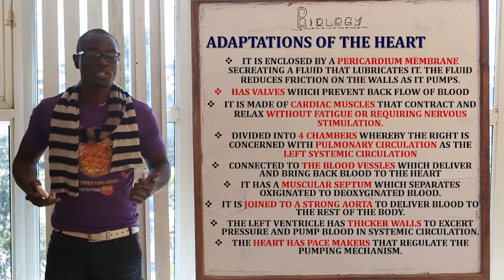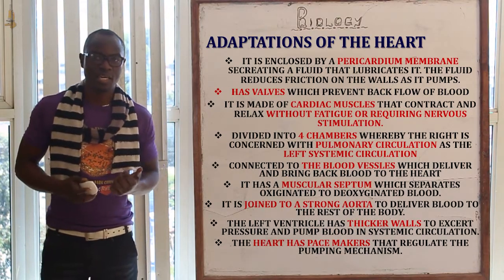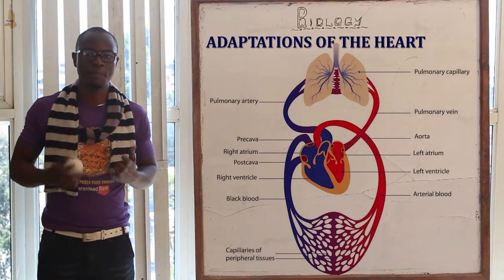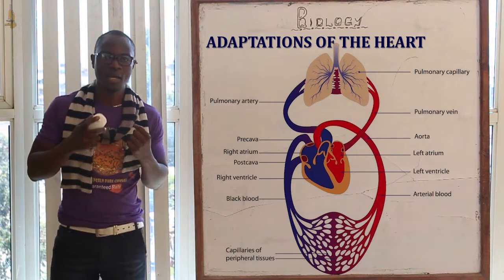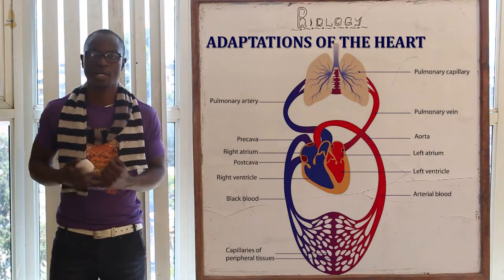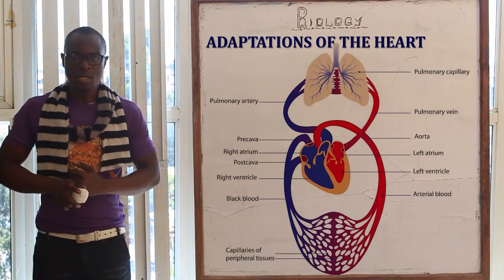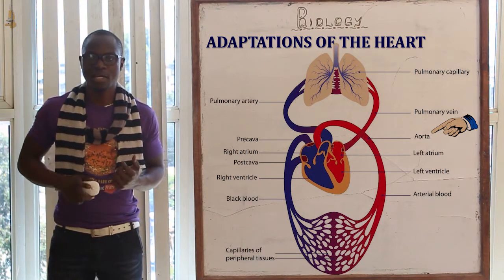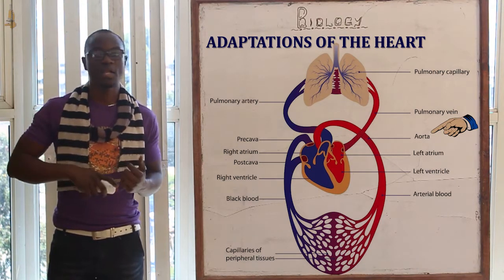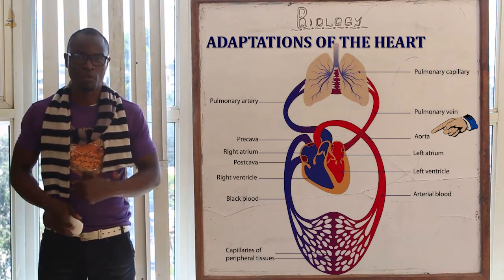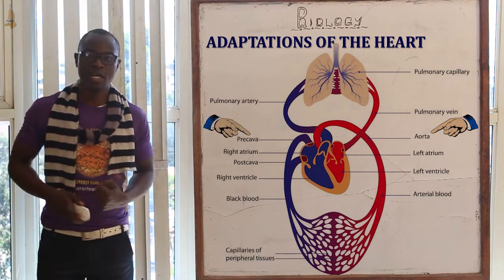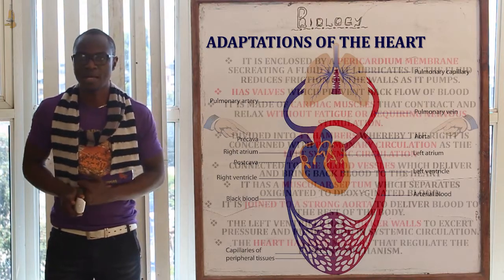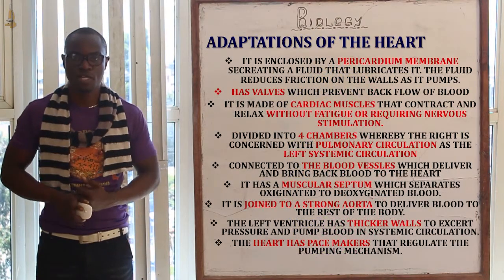Another adaptation is that the heart is connected to blood vessels which mainly deliver blood and bring blood back to the heart. The aorta is the main artery that takes blood to the rest of the body, while the vena cava is the main vein that brings blood back to the heart.